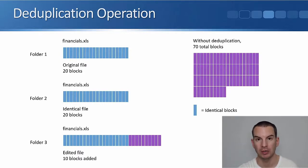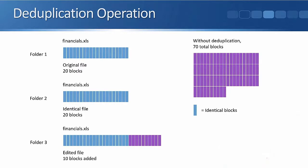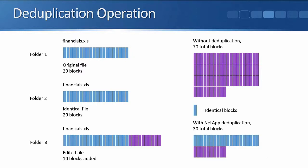The blocks colored in blue are identical. In each of the three files I've got the 20 identical blocks, and then I've got 10 unique blocks in file three. If we add that all together, it's 20 identical blocks plus 10 unique — that makes 30 blocks. Without deduplication it's 70 blocks; with deduplication it's only 30 blocks — over 50% space savings.